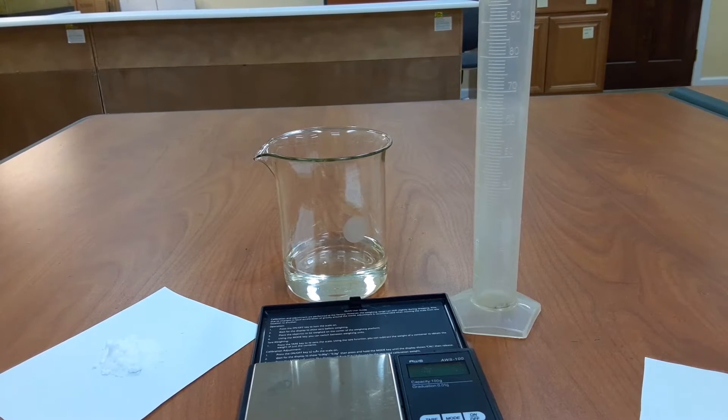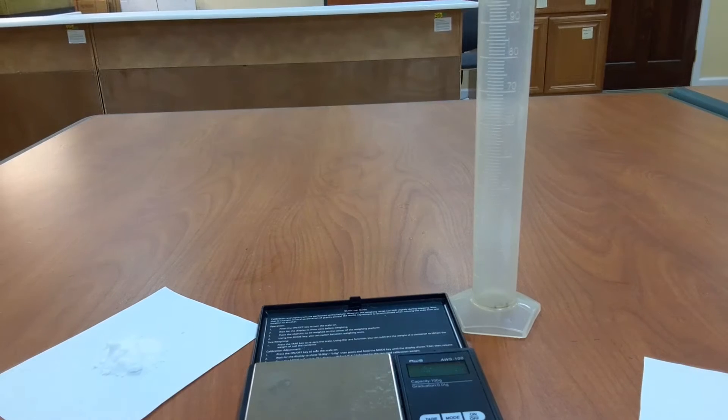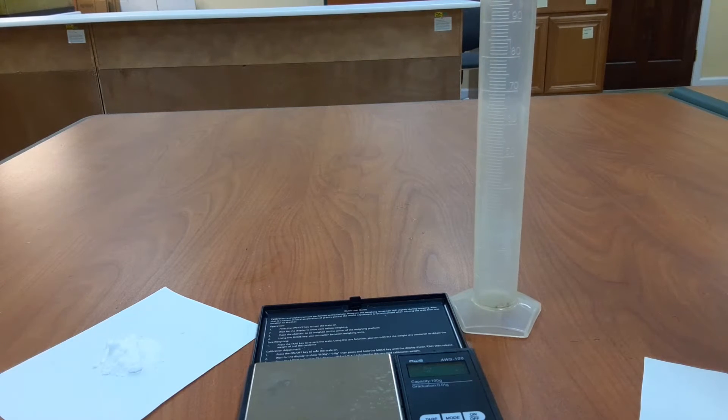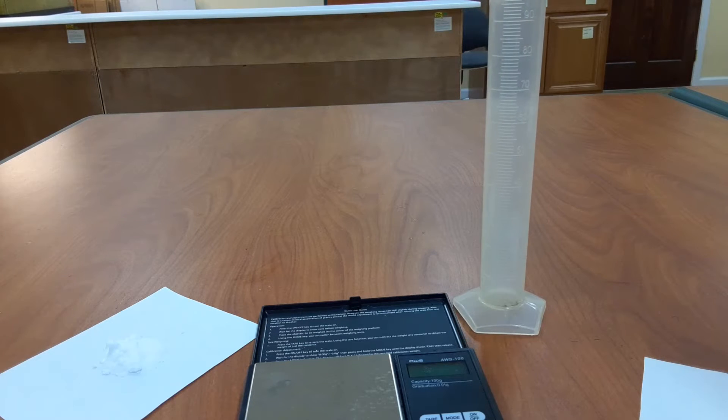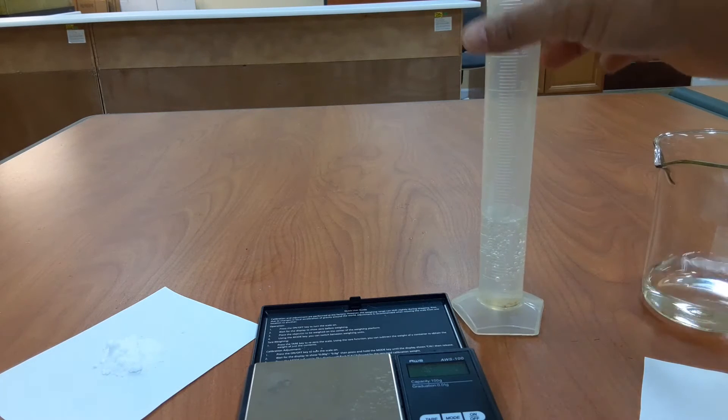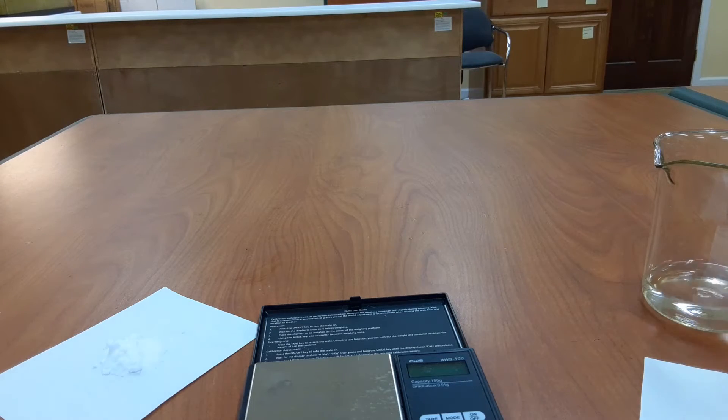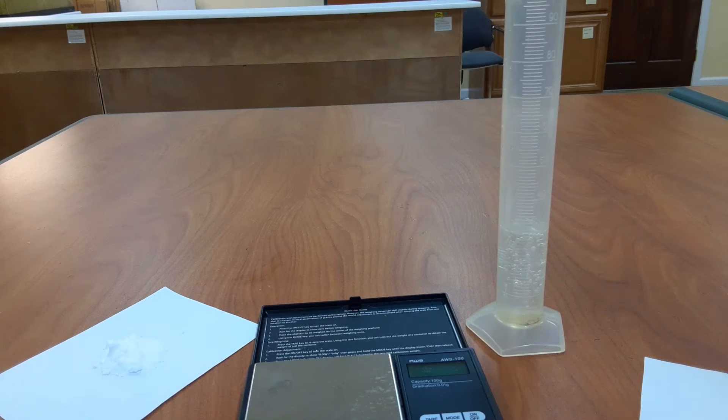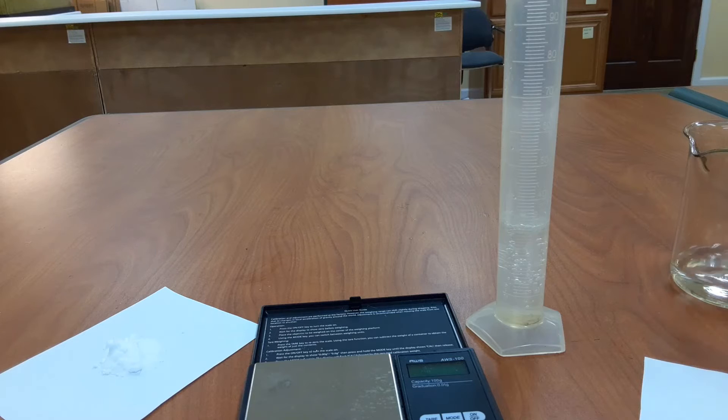To start the experiment, we will take our vinegar and pour about 30 ml into the graduated cylinder. It does not have to be exactly 30 ml, but we do not want to be too far off from 30 ml either. I'm just pouring the vinegar into the graduated cylinder, and I have about 30 ml. As I said, the exact amount of vinegar in the measuring cylinder does not really matter.